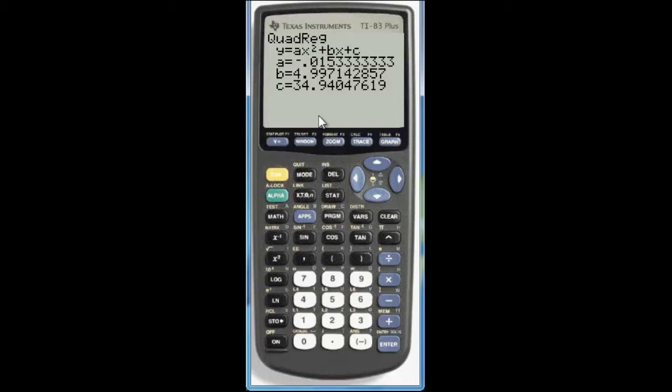This would in the form that they have it in the book represent y equals negative zero point. Let's round it off to the thousandths place. Negative zero point zero one five x squared. Or in your book it would be t squared. plus four point nine nine seven t plus thirty four point nine four zero. And that's part a. That's the regression equation. That's the model for this quadratic regression.